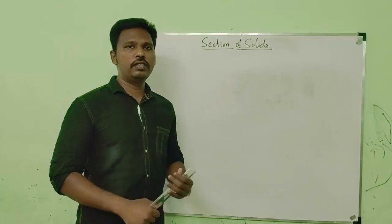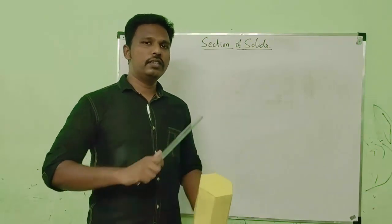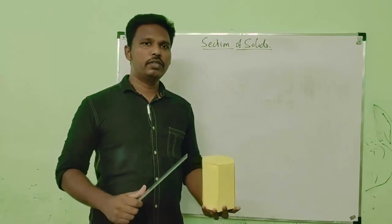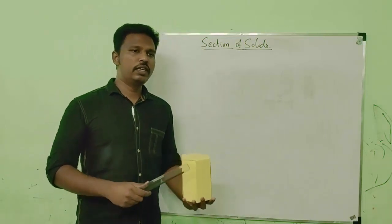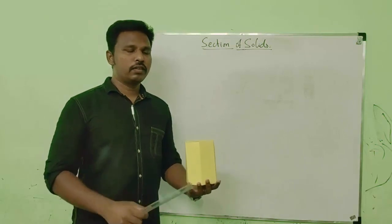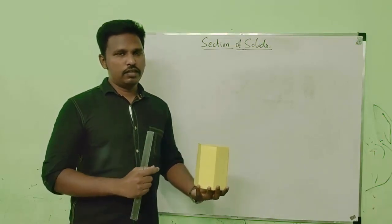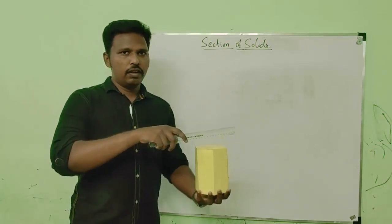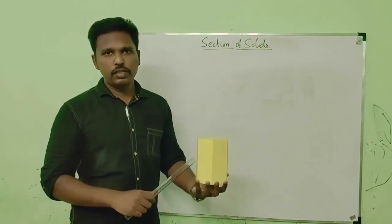Welcome to the topic of sectioning of solids. Sectioning is the process of cutting solids in a given orientation to see the newly exposed surfaces. Generally, sectioning is done to show the internal features which are hidden in the general view. If you see the front view, some hidden components will be there. By doing the sectioning, it removes some portion of the solid and the internal parts become visible.